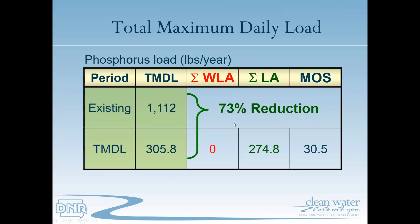A 73% reduction may seem insurmountable, but this is a multi-year, long-term solution to a long-term problem. We're not expecting it all at once — if we reduce it a little each year over time, we can get to that TMDL value.